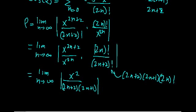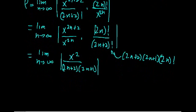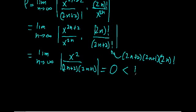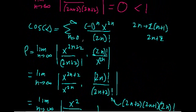As we take the limit, the denominator goes to infinity, which means — unless x is infinite — the whole term goes to 0, just as before. Since 0 is less than 1, this series will always converge for any finite value of x.